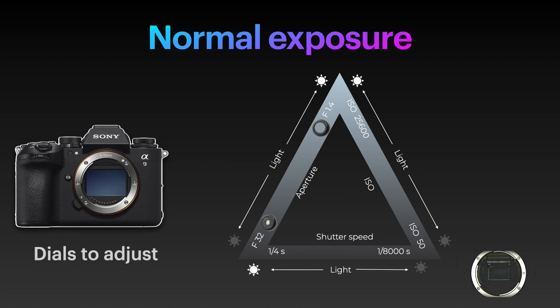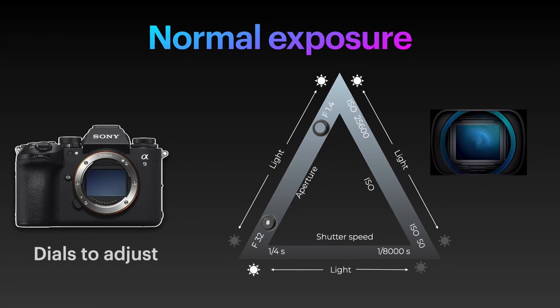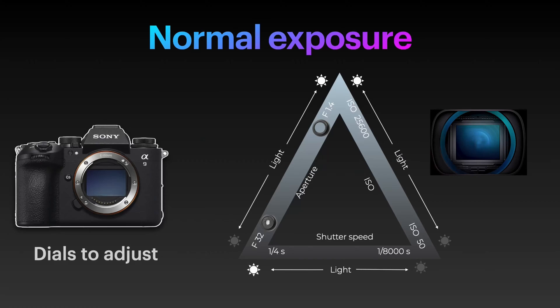If we have a shutter speed of say a quarter of a second, this lets more light in versus a faster shutter speed like 1/8000th of a second, which will make the image darker. Finally, ISO is a digital gain of the light hitting the sensor. A low ISO value of 50 will not add a lot of gain versus an ISO of 25,600, which would add a lot of electronic gain to the image making it brighter.